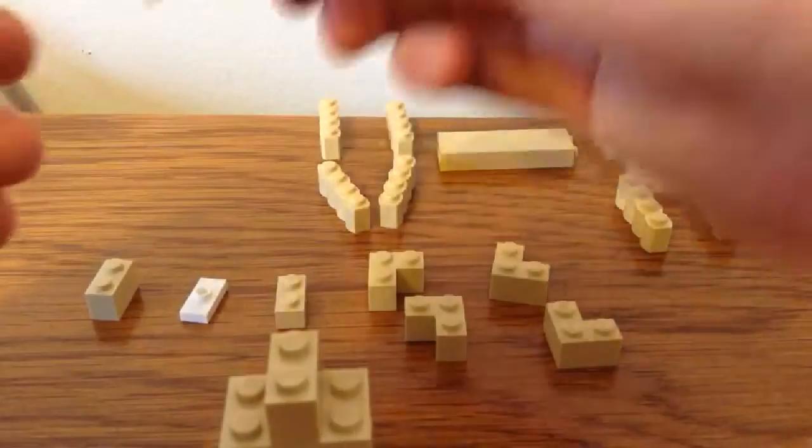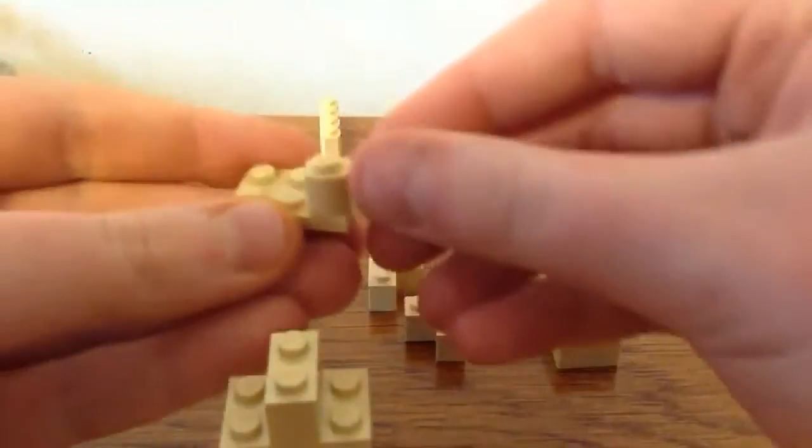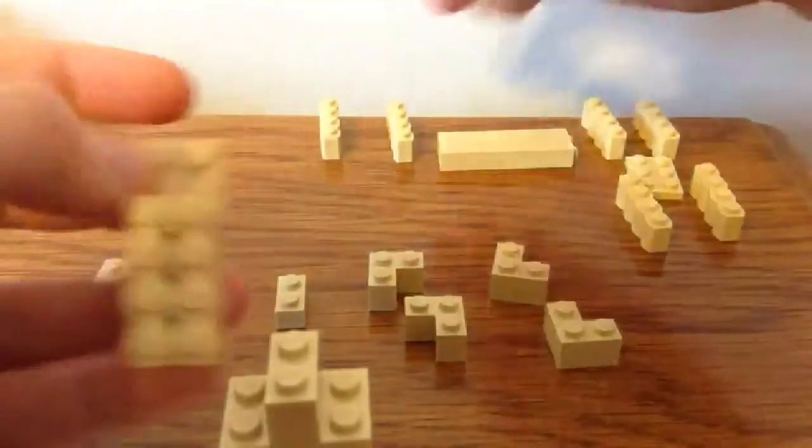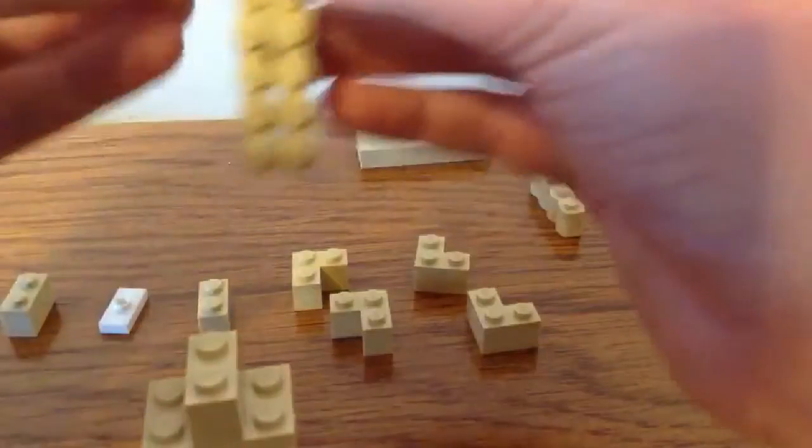And now we're going to make some arms. So, you need another 2x3 tan plate and then four 1x4 tan bricks. So, put one of them on each corner like this. And I didn't have straight bricks, but I had curvy bricks. But either one will work because maybe the curvy bricks add a little bit more detail.